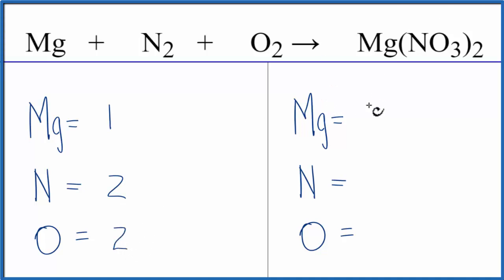On the product side, we have one magnesium, and then this two applies to everything. So we have one nitrogen times two, giving us two nitrogens. For oxygens, we have three times two, six oxygen atoms.